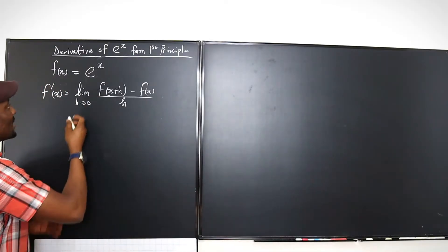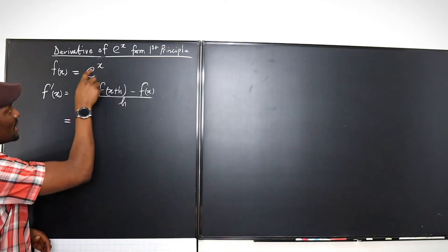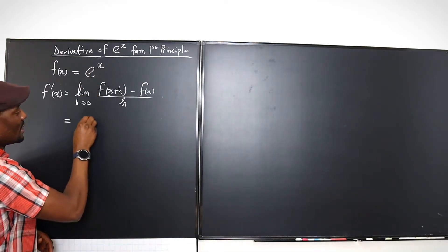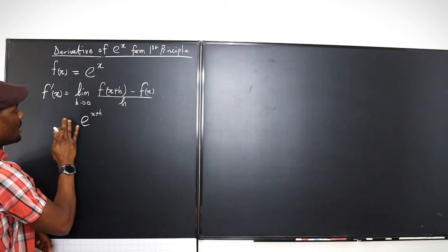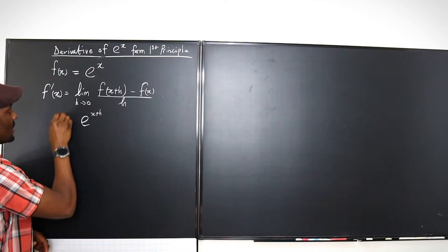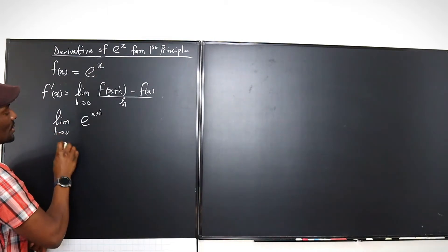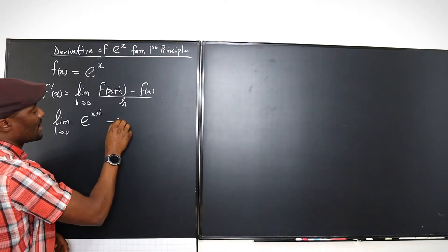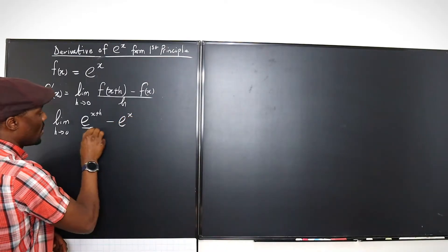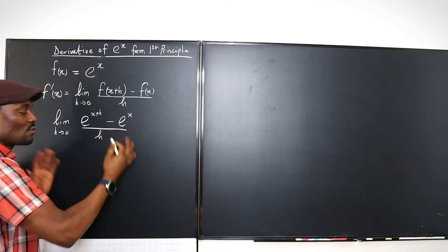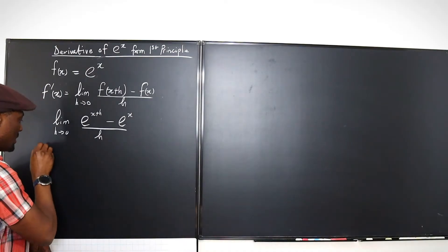At this point I'm going to introduce the function. So f prime of x will be the limit as h goes to 0 of e to the x plus h minus e to the x, all over h. This is what we're going to be working with. Let's go to the next line.